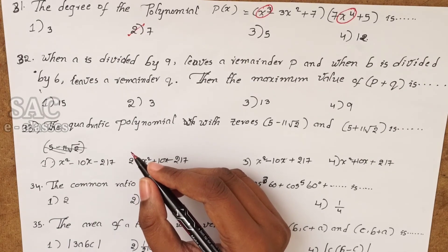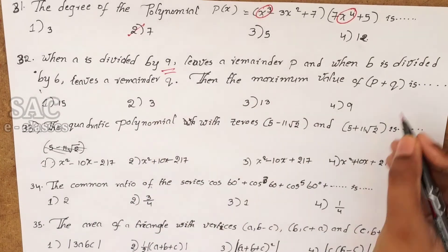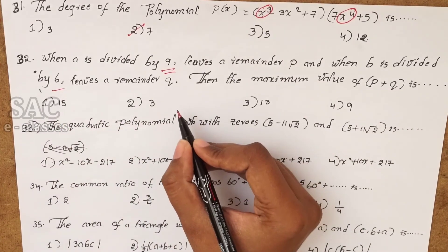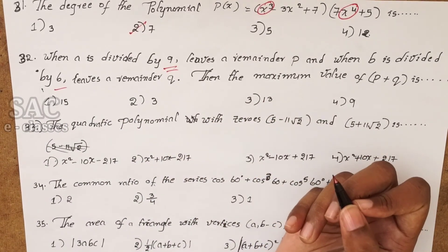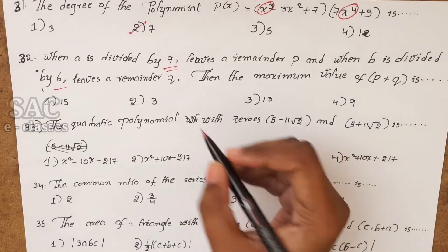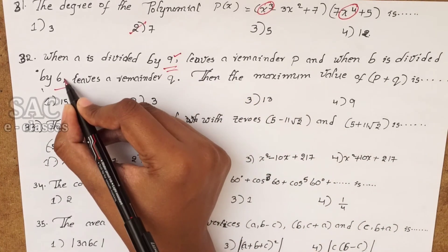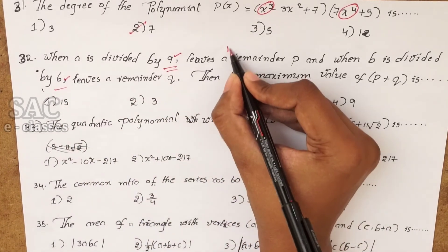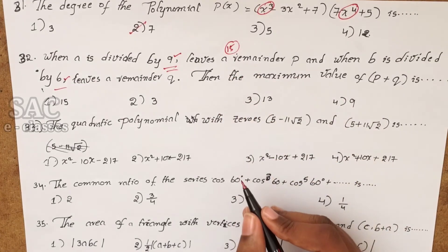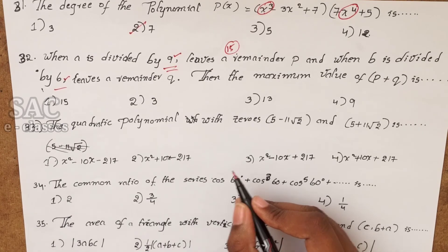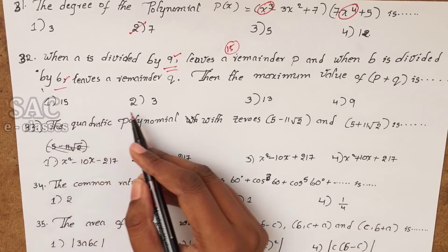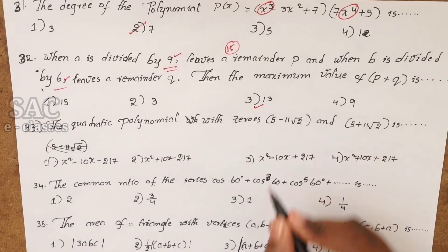Problem 32: when a is divided by 9 it leaves remainder p, and b is divided by 6 it leaves remainder q. The maximum value of p+q: p can be at most 8 and q at most 5, but since the maximum combined remainder less than 15 ranges from 0 to 14, the maximum value of p+q is 13.